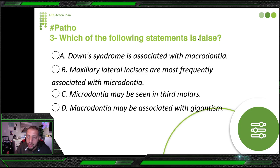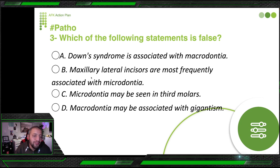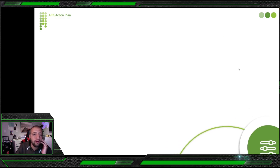Third question from pathology: 'Which of the following statements is false?' When you see the word 'false,' circle it with your pencil or note it if doing computer-based testing. Options: Down syndrome is associated with macrodontia; maxillary lateral incisors are most frequently associated with microdontia; macrodontia may be seen in third molars; macrodontia may be associated with gigantism. To confirm: macrodontia is a bigger tooth; microdontia is a smaller tooth.